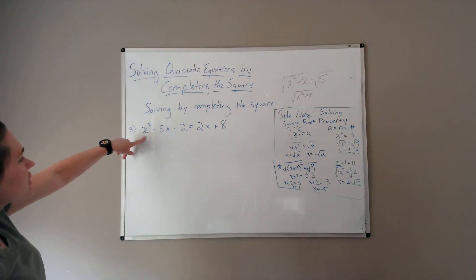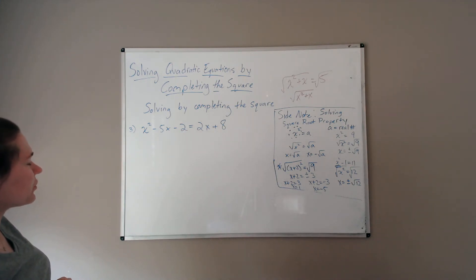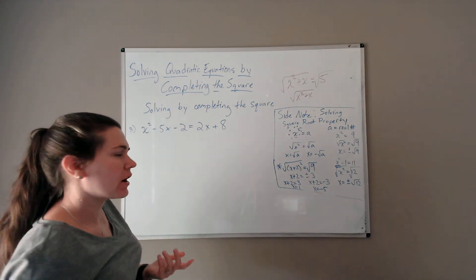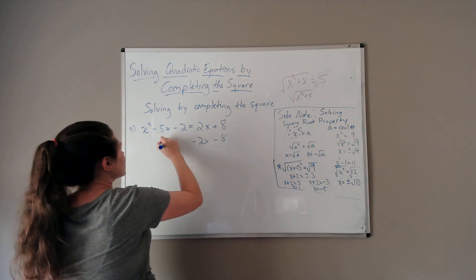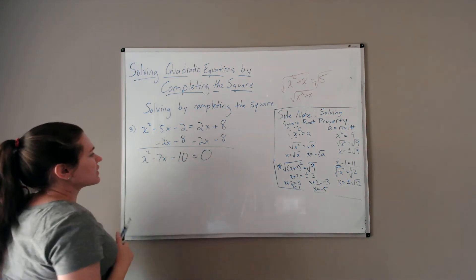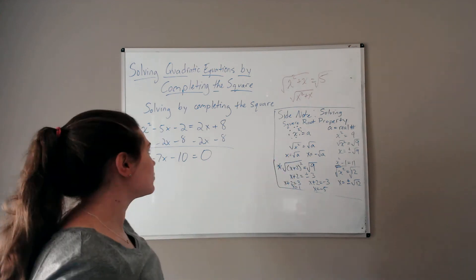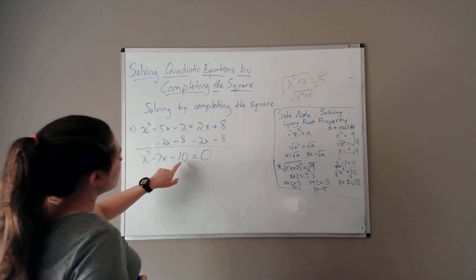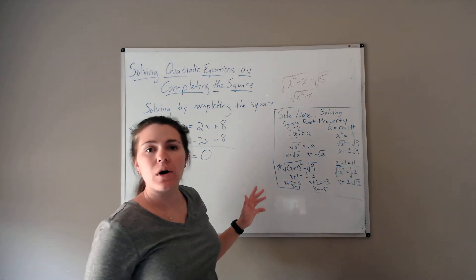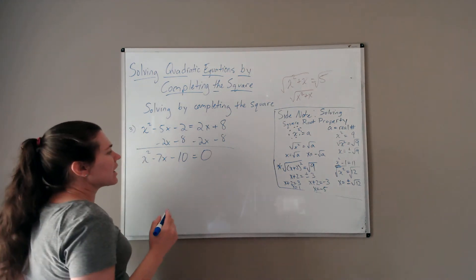Problem 3: x squared minus 5x minus 2 equals 2x plus 8. When solving a quadratic equation, you first need it set equal to zero. Check standard form to confirm it's quadratic and decide on method. Can I find two numbers that multiply to give negative 10 and add to give negative 7? No. If I could factor I would since it's more efficient, but I can't — so I'll have to complete the square.